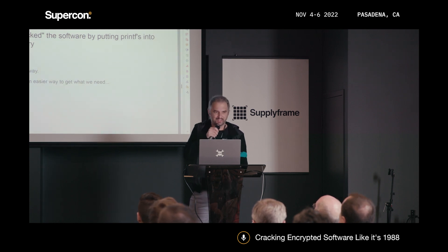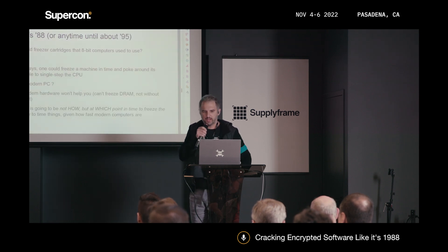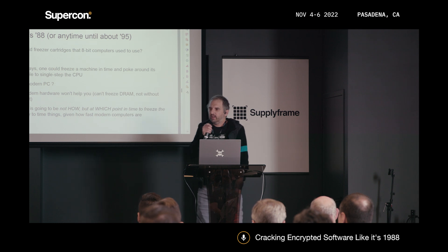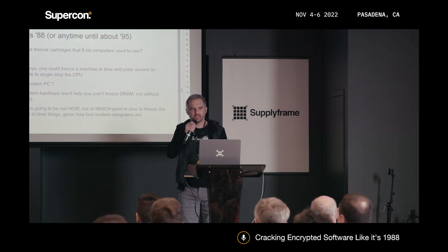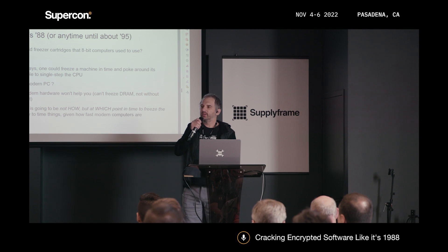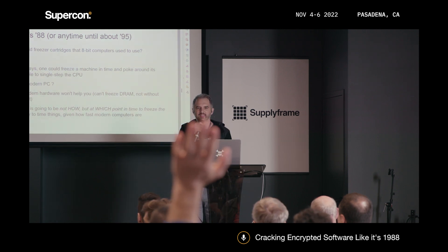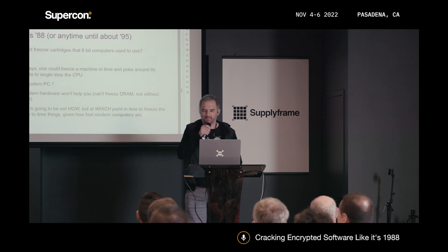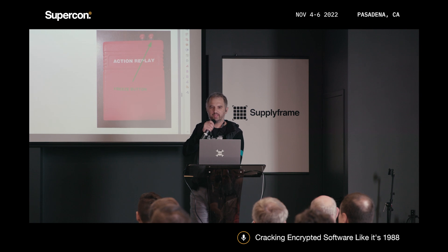That was the hard way. There is a much easier way. If you're old enough, some computers back in the day used to have freezer cartridges — you could press a button and freeze your computer in time. Who has ever seen or used one? This is my own personal Action Replay cartridge for Commodore 64. The right button is freeze — you press it and the machine freezes. You can poke around the memory and do whatever you want.